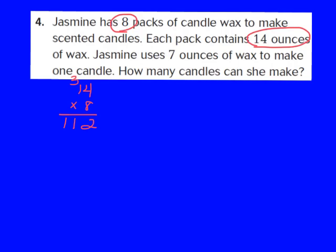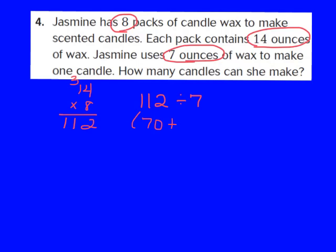So I have a total of 112 ounces of candle wax. Jasmine uses 7 ounces to make one candle, so I'm going to take my 112 ounces and divide that by 7. The problem 112 divided by 7 is not a very easy division problem to work, so I'm going to use my strategy Solve a Simpler Problem. I'll break that 112 apart into 70 plus 42, because 70 plus 42 gives me back 112, and both 70 and 42 are multiples of 7.